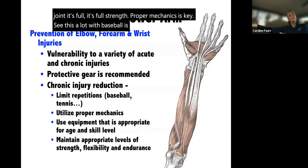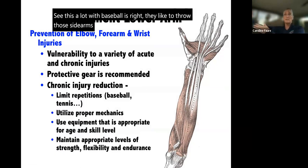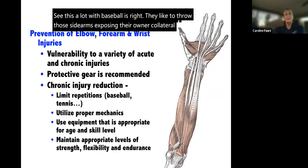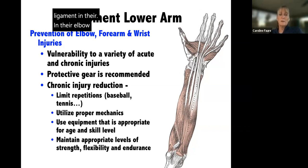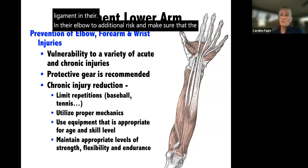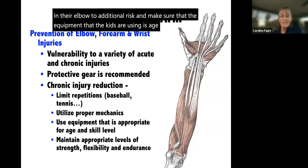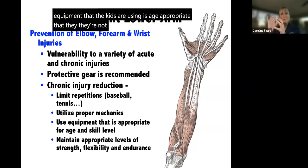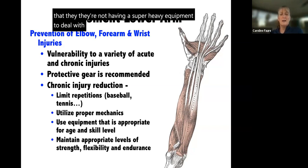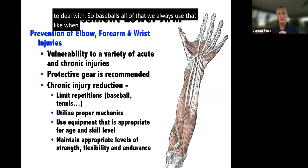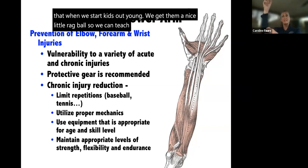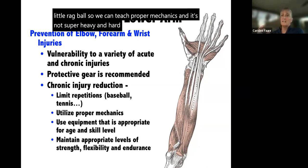Proper mechanics is key — we see this a lot with baseball players who throw sidearm, exposing their ulnar collateral ligament to additional risk. Make sure the equipment kids are using is age-appropriate. With baseballs, when we start kids out young we get them a rag ball to teach proper mechanics, and as they get older the ball progresses to standard size.